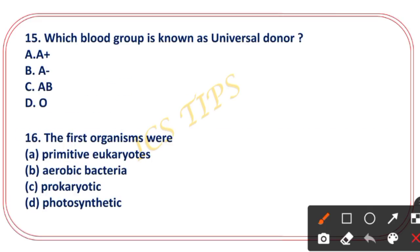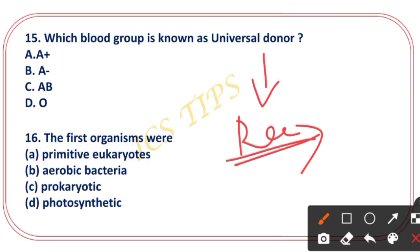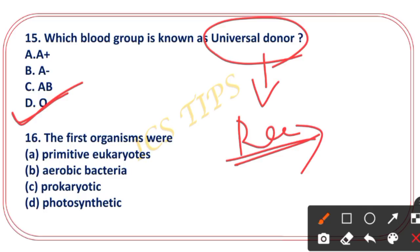Which blood group is known as the universal donor? The right answer is O blood group — O is the universal donor. Please refer to this for the enabling functions related to blood transfusion.